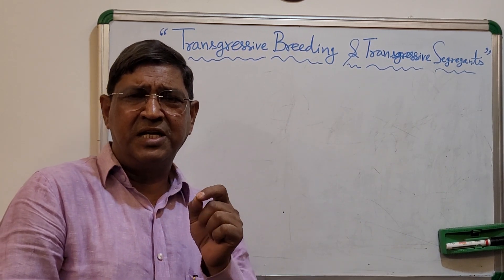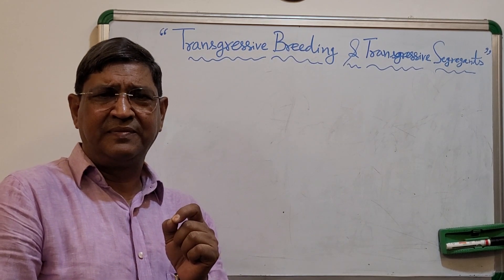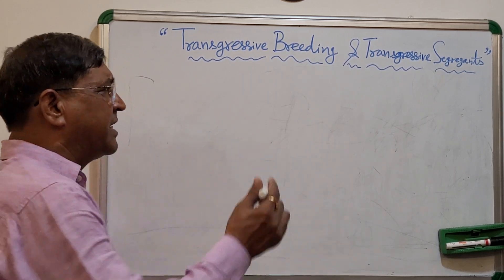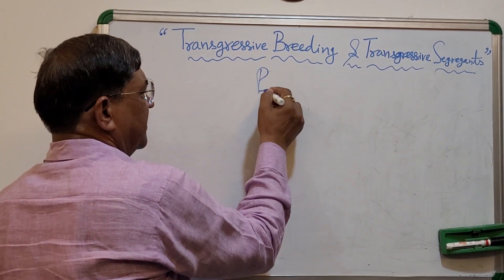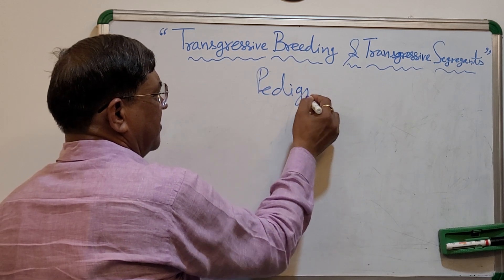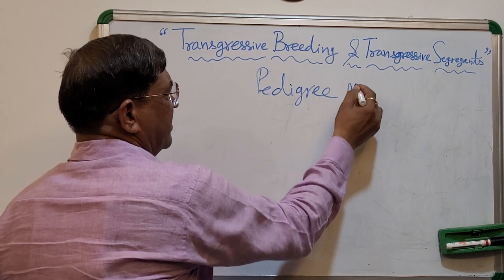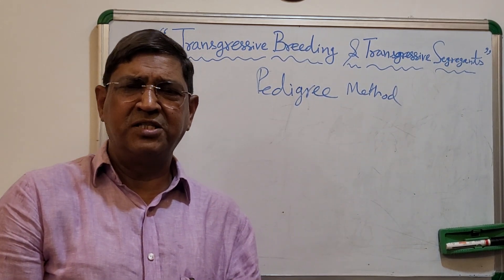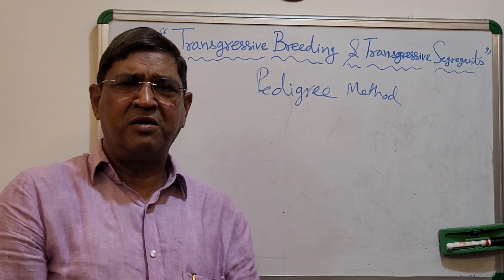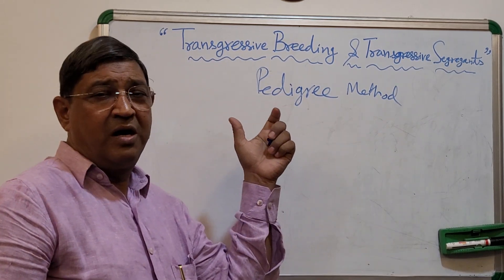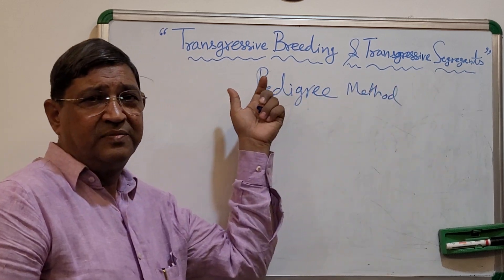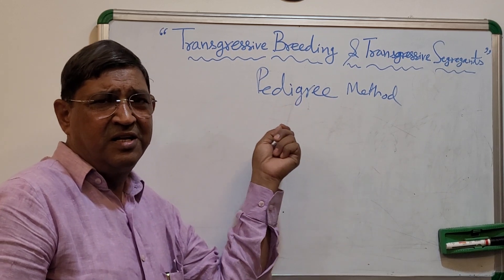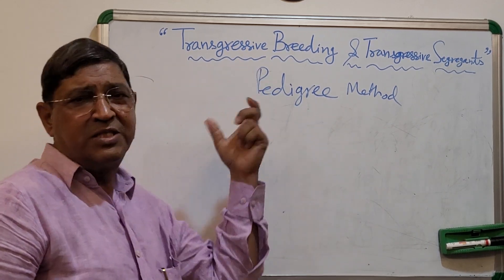But if you, in real sense, want to say what is the best method of transgressive breeding, that is the pedigree method. Though in other methods also you can utilize the transgressive segregants, but the best method of utilizing transgressive segregants is the pedigree method. So you can consider that the pedigree method is the best method of transgressive breeding.